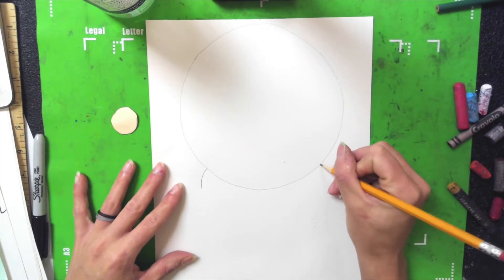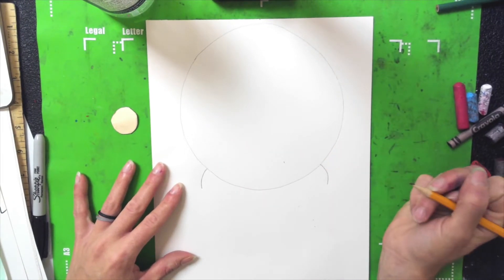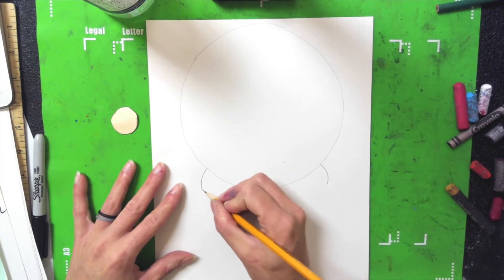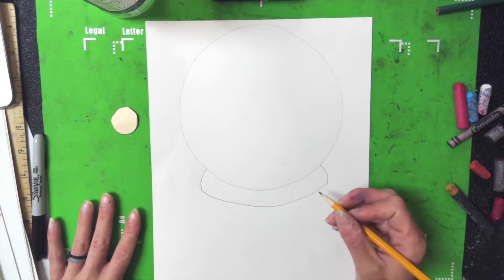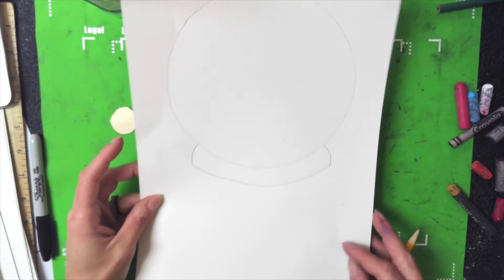We need a curved line on this side, curved line on this side, and a smiley face to connect them. So now it looks like a snow globe.